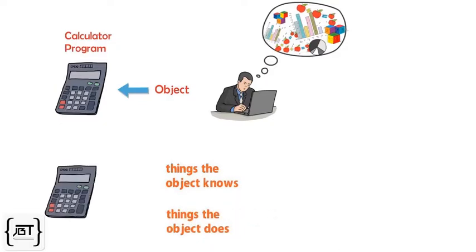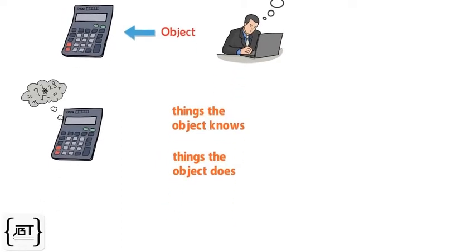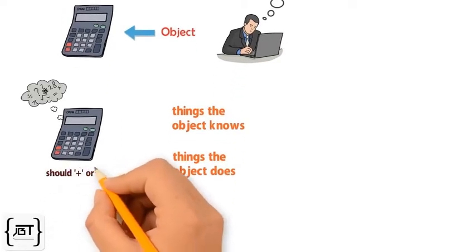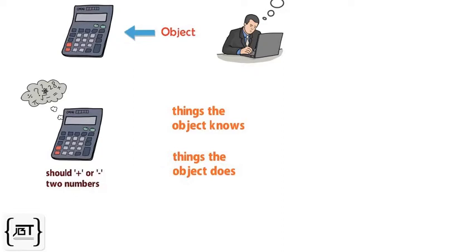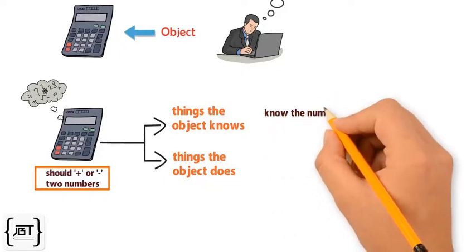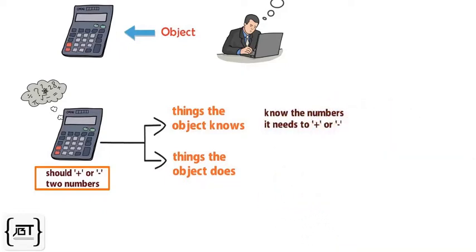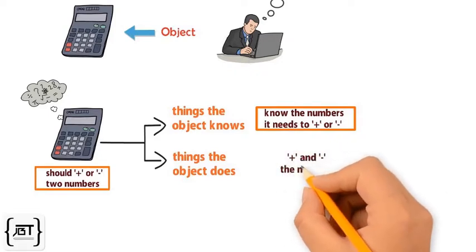For example, to start with, our calculator should add and subtract two numbers. In this case, the calculator object will know the numbers it needs to add or subtract and it will actually add and subtract the numbers.